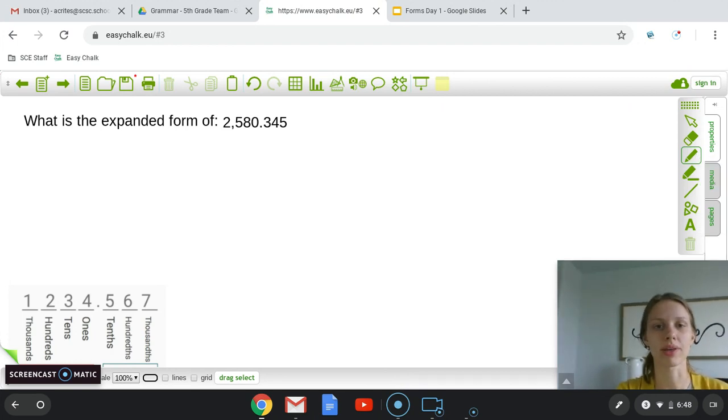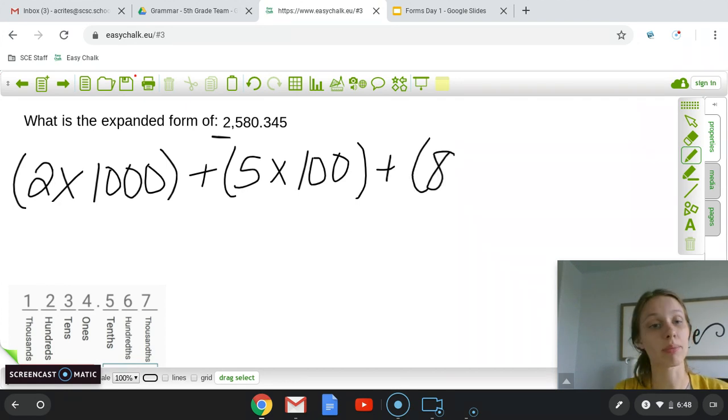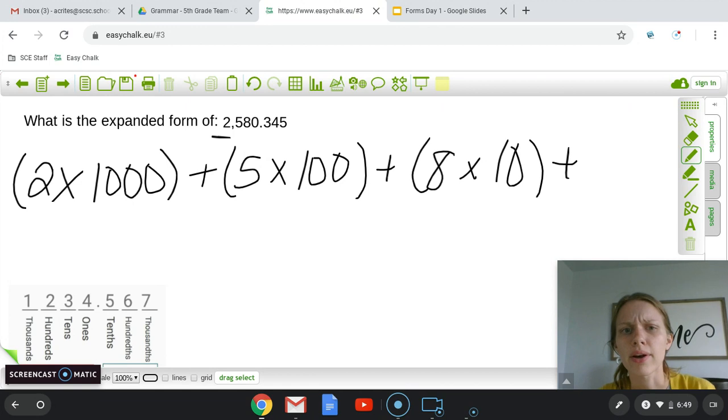So we'll start with our 2. So parentheses, 2 times, I know it's 2,000, so that means it's in the thousands column, 2 times 1,000, plus what place value is our 5 in? 100ths, plus, then we do our next number, because remember, we're going greatest to least, left to right, 8 times, what's the next place value? 10. And then our next number is 0, right? We're not going to write that, because if we write 0 times 1, because it's in the ones place value, what's that going to get me? Yeah, it's going to get me 0. It's a waste of time. It's a waste of space. Don't worry about putting the 0.